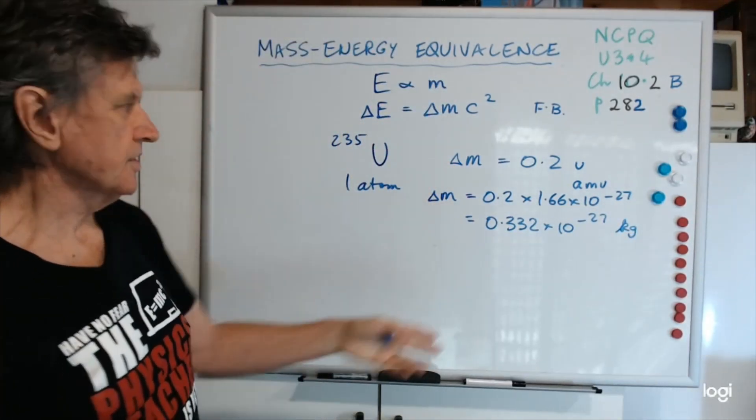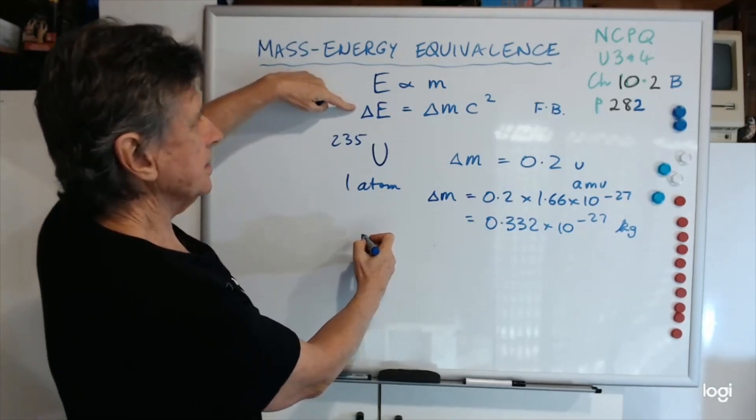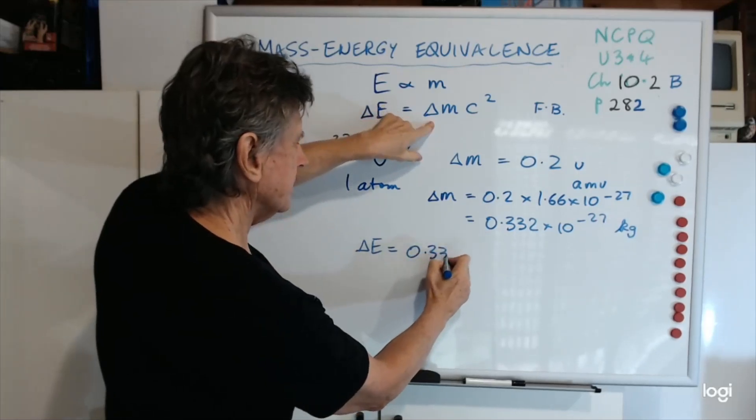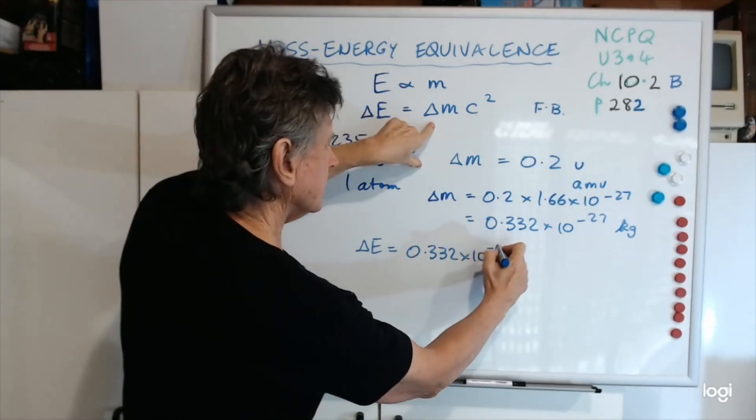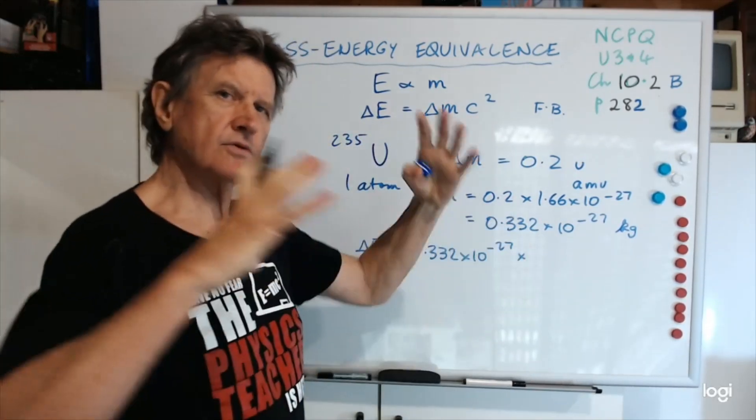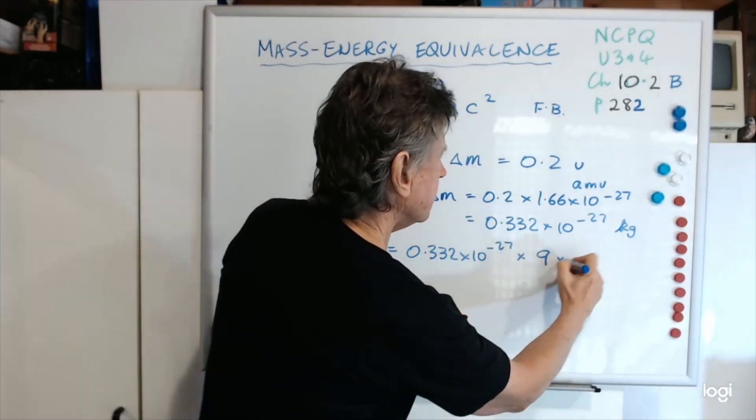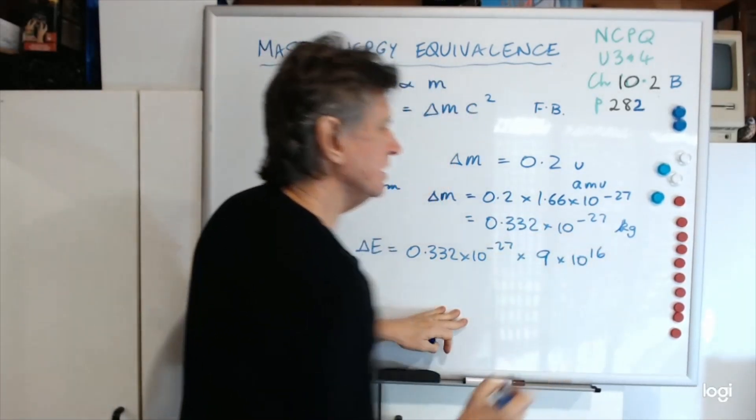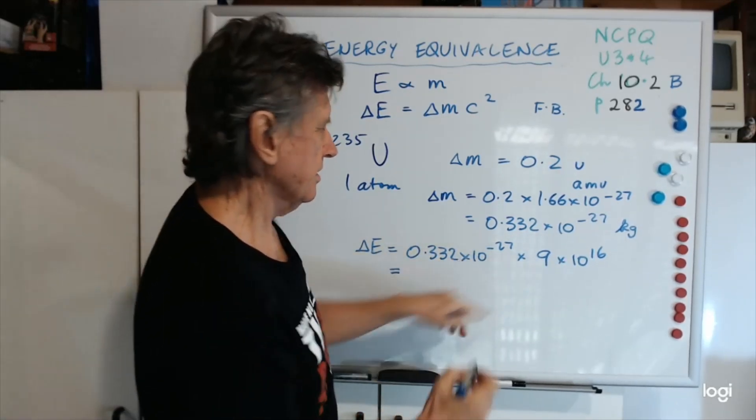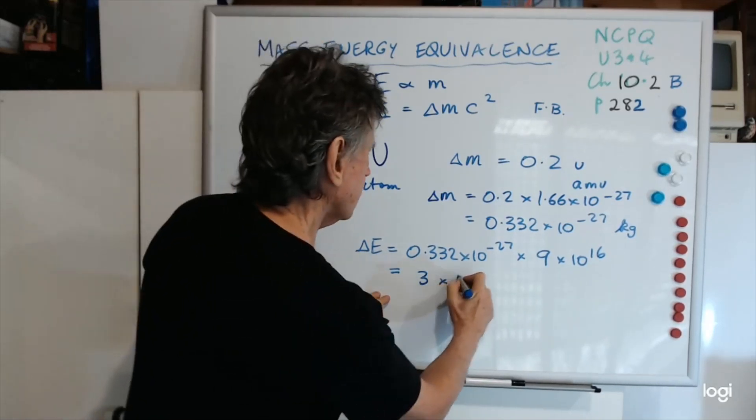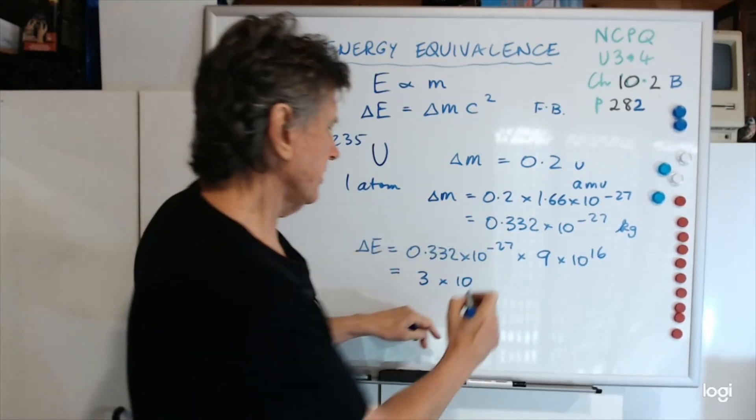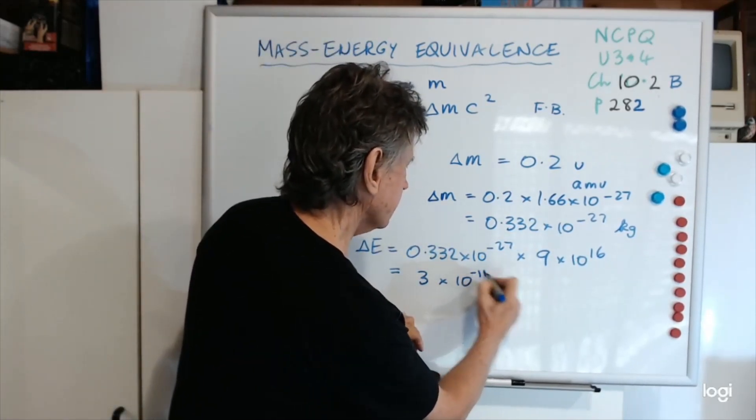And so you just substitute that in to your equation. So, I'll use this one here, delta E equals delta M, which is now that, times C squared. Now I told you before, C squared is 3 by 10 to the 8 all squared, which was 9 by 10 to the 16. Now, if you multiply that through, you get, that's about a third of that, so that comes to about 3 times 10, add 16 on to negative 27, and you get about negative 11 joules.